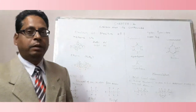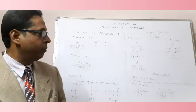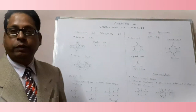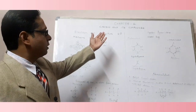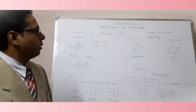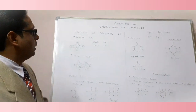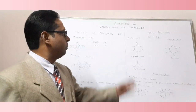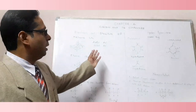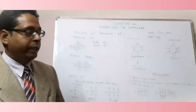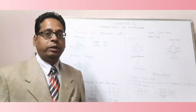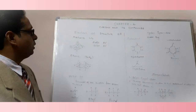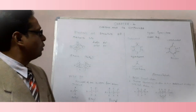Hello students, welcome to my channel 'Learn at Home.' In the previous lecture we had started Chapter 4: Carbon and its Compounds. We had discussed what compounds are and how they are classified, like saturated and unsaturated hydrocarbons. Today we are going to start with the electron dot structure of methane, ethane, etc.